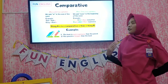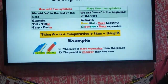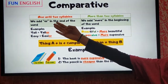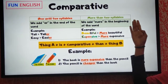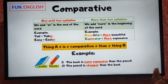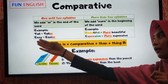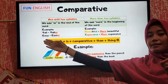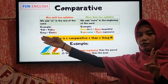Next. So in comparative, there are two rules. The first is when we have one until two syllables, and when we have more than two syllables. What is a syllable? Syllables are like this — 'tall,' so there is only one syllable. 'Easy' — E and Z — so there are two syllables.